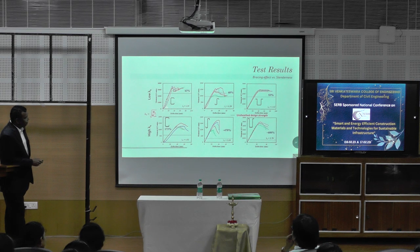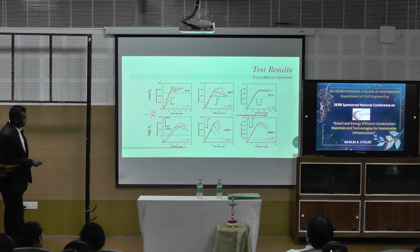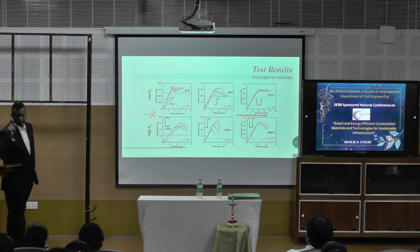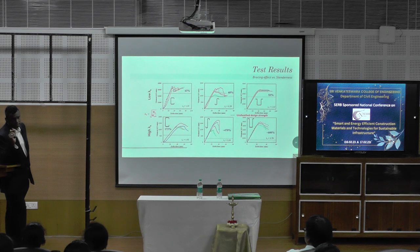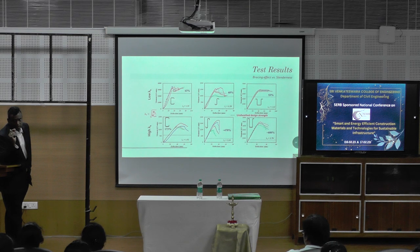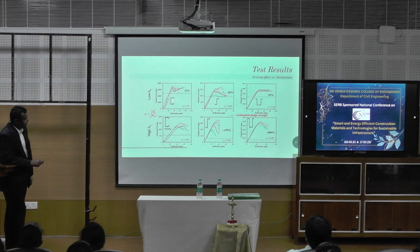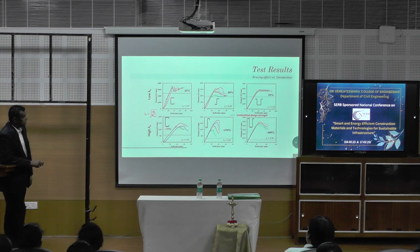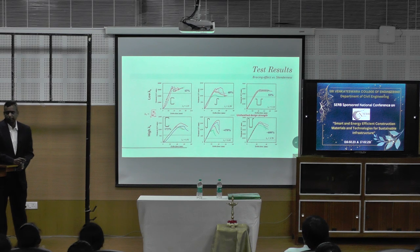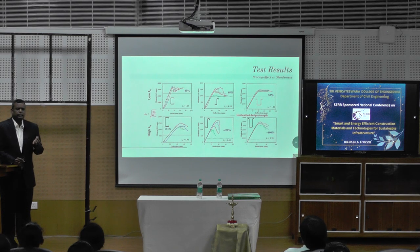We also wanted to study the effect of cross-section slenderness. If the slenderness is very low, it means basically a thicker cross-section. Slenderness is an indication of thinness — more slender means more thin, less slender means less thin. For lower slenderness, the improvement in load carrying capacity is only 43%, 68%, and 53%. There is a difference in how different cross-sections behave. But if it is highly slender, the improvement can go up to 173%, 470%, and even 600%.